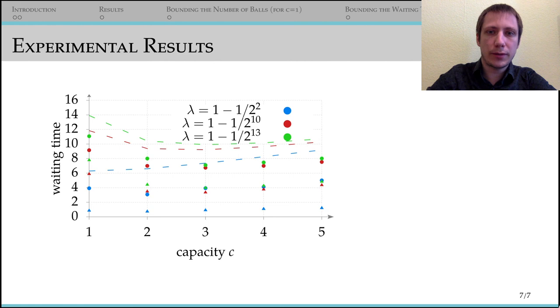Here we see the average waiting time in the simulation as triangles and the maximum waiting time as circles. Since balls can wait up to C rounds after allocation, for a fixed lambda the waiting time decreases up to a certain value of C but then increases again. Our results capture this phenomenon so we see that this is not merely an artifact of our analysis but there actually exists a finite, non-trivial, optimal capacity C depending on lambda.